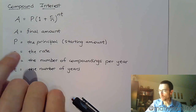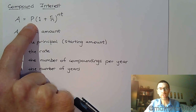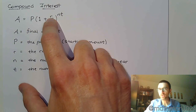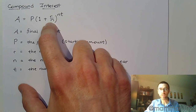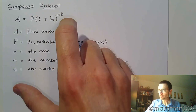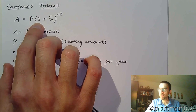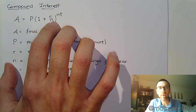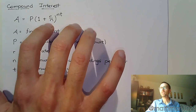For compound interest, the formula gives you the final amount — not just how much you earn, but your total final amount. It's based on your principal P, your starting amount, times one plus r over n, where r is your interest rate written as a decimal and n is the number of compoundings per year. If something is compounded monthly, n equals 12. Then t is measured in years. The '1' in the formula means 100% — you get 100% of your principal back plus a small percentage on top.